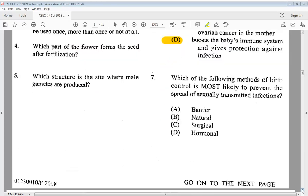Question 7. Which of the following methods of birth control is most likely to prevent the spread of sexually transmitted infections? A, barrier. B, natural. C, surgical. D, hormonal. We know the answer is A, barrier.